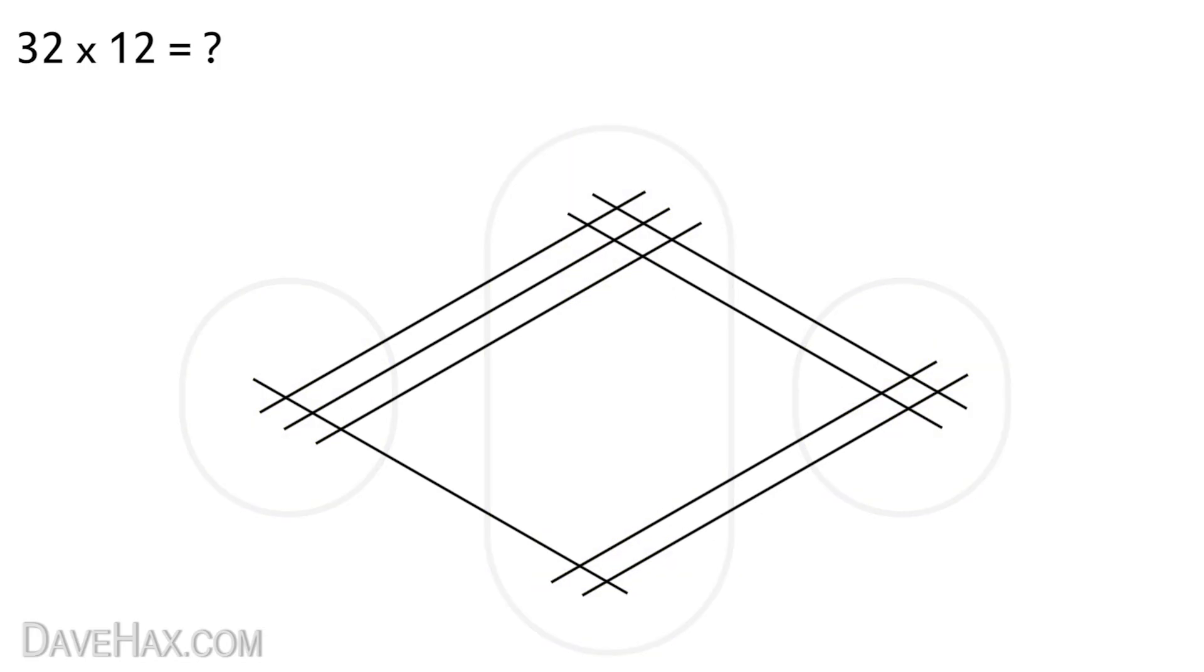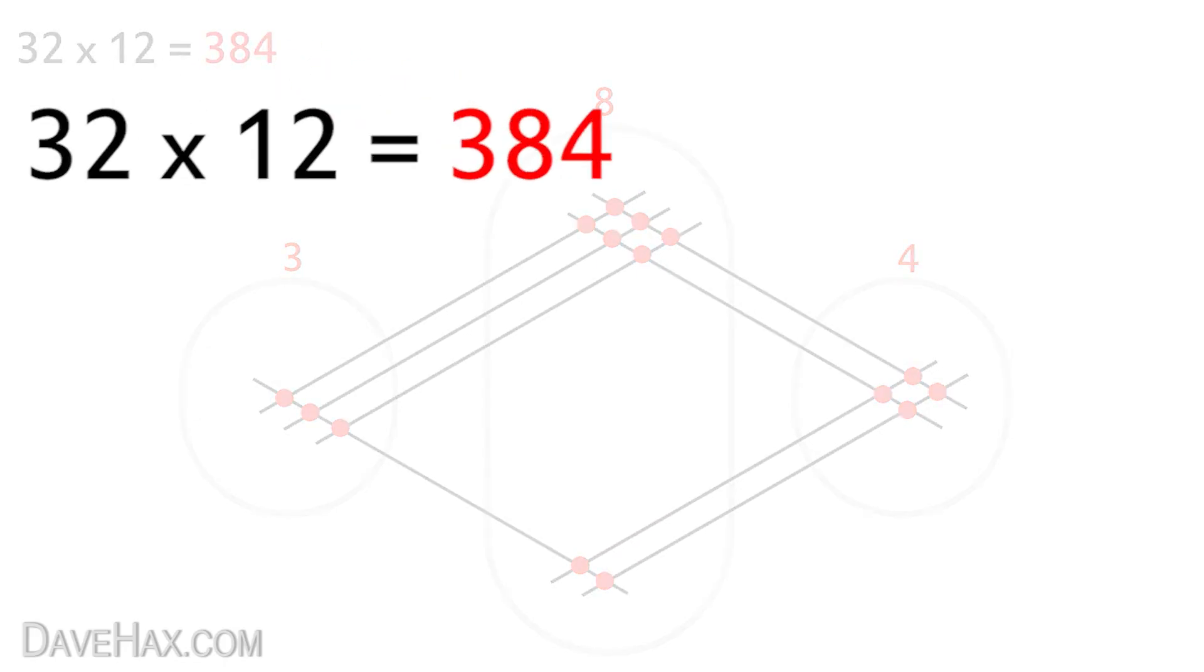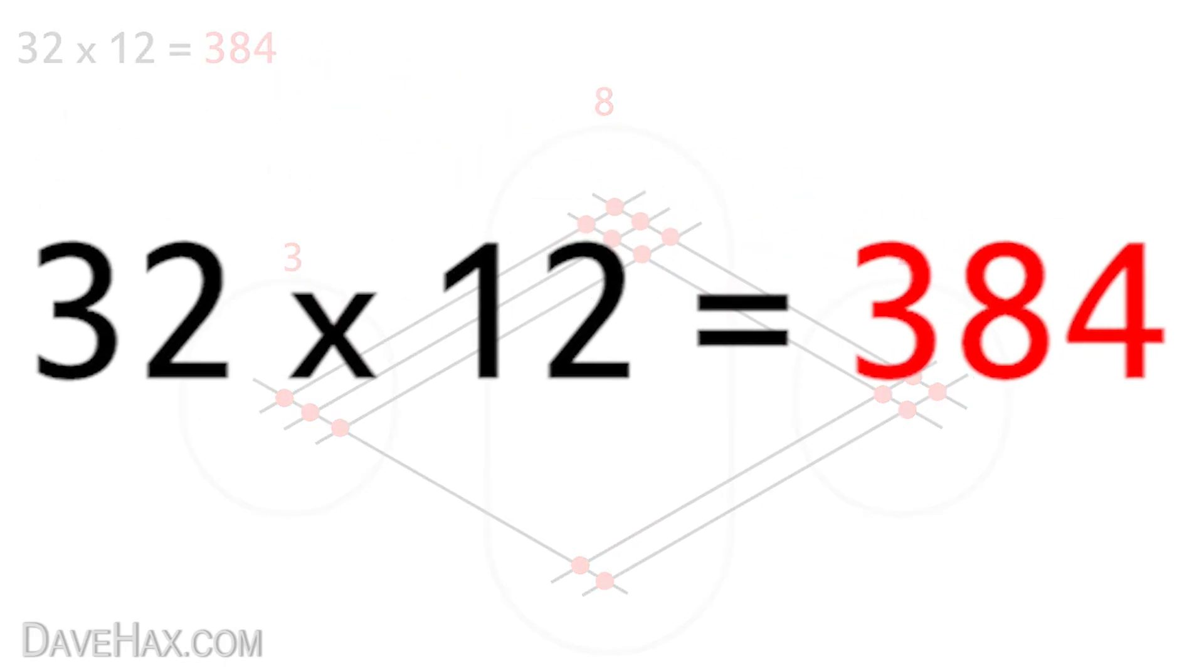And starting from the right start counting the dots. 1 2 3 4. 1 2 3 4 5 6 7 8. Write that here. And finally 1 2 3. 3 8 4. 384. There we have our answer. Simples.